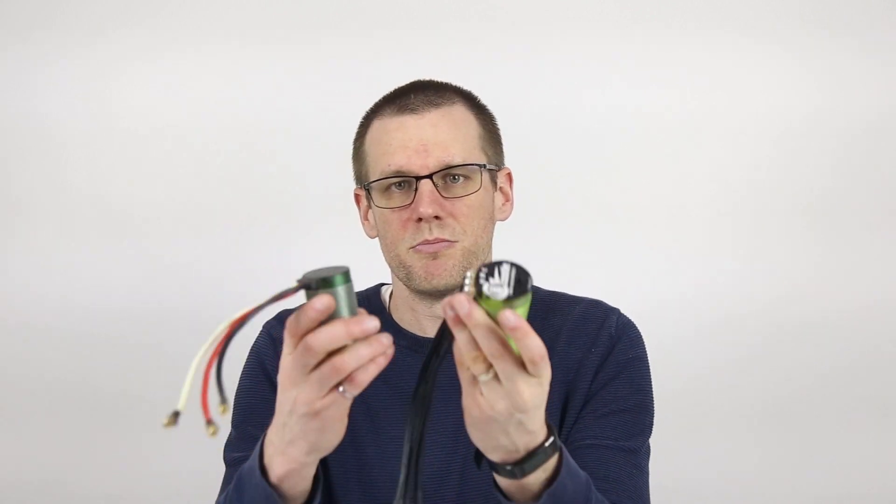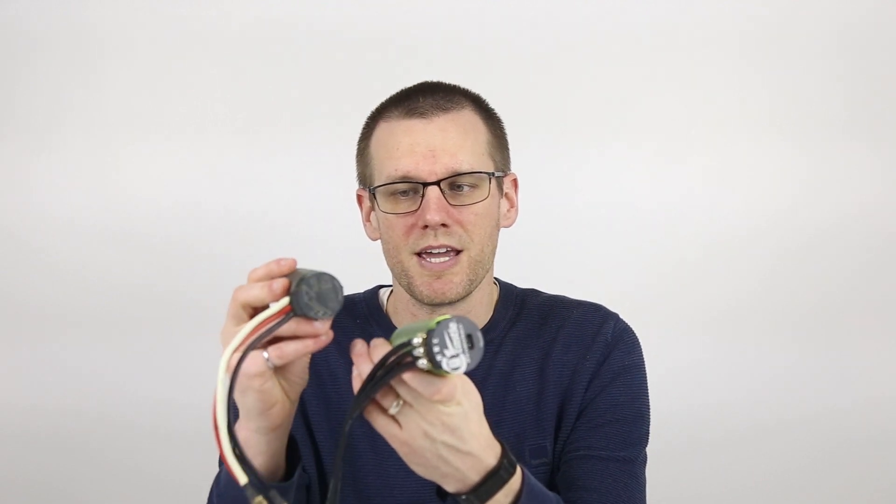So here's a couple of Castle motors that I have right here. Both of these are different sizes. This one is known as a 1512 brushless motor and the other one is the 1721 that we've seen in many different videos. Now what most manufacturers do is they take the overall can size of the motor and that is what represents the actual size.